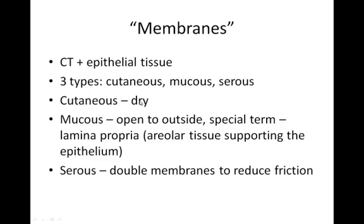For the cutaneous membrane — our skin — the underlying connective tissue is always going to be dense irregular connective tissue. There might be just a small amount of areolar connective tissue before we get to that dense irregular connective tissue, but it's always going to be the bulk. The epithelial tissue that makes up your skin is keratinized stratified squamous epithelium, which makes up the epidermis. The underlying connective tissue making up the dermis is dense irregular connective tissue.